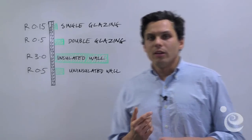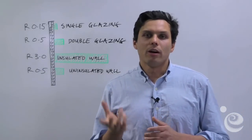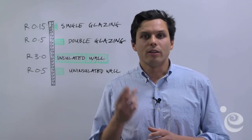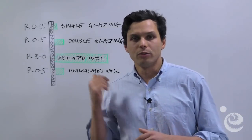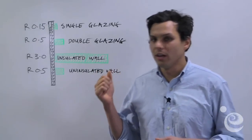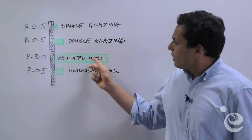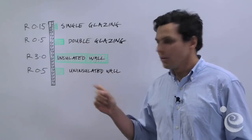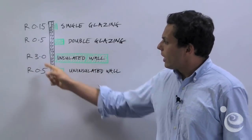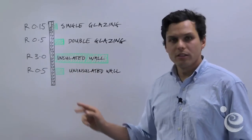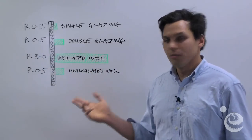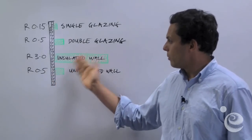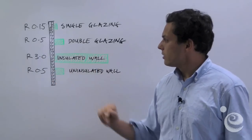So if you think about R values, you can apply this concept to different elements within a building, and I've drawn up some examples over here. An insulated wall with a good insulation bat with plaster and weatherboards on it will have an R value of about 3. If you took the insulation bat out of that wall, it'd have an R value of 0.5, so about six times worse than the insulated wall.